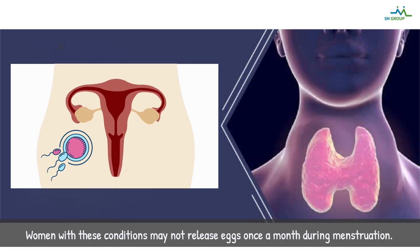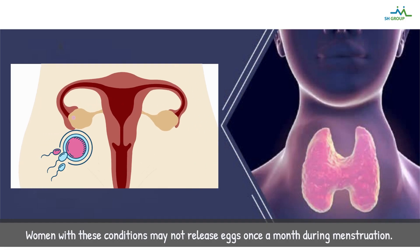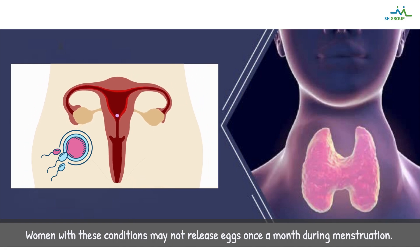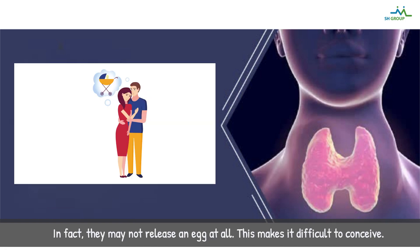Women with these conditions may not release eggs once a month during menstruation. In fact, they may not release an egg at all, making it difficult to conceive.